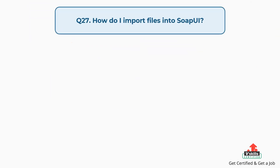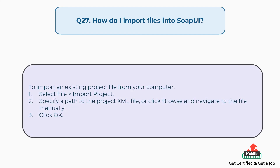Question number twenty-seven: How do I import files into SOAP UI? To import an existing project file from your computer, select file, then import project. Specify a path to the project XML file, or click browse and navigate to the file manually, then click OK.